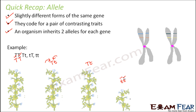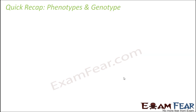So each member of a gene pair is an allele, and one pair of alleles forms a gene. Now by this point we all know what a phenotype and a genotype are, but let us have a quick recap. Phenotype is something which is observable — something which is displayed, something which you can see.